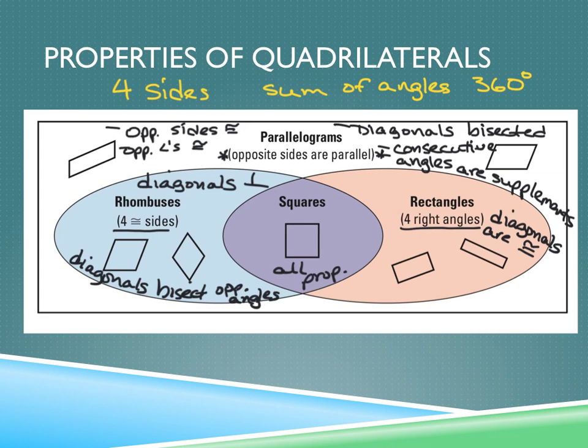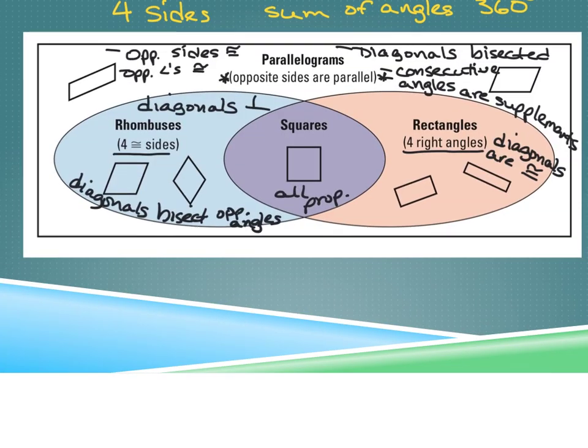So you need to memorize these properties. A lot of the test is this vocabulary, so make sure you're studying it. Understand all the properties. Now remember that trapezoids and kites are not parallelograms, so they're not going in the box. I'm going to put them outside — trapezoids and kites.